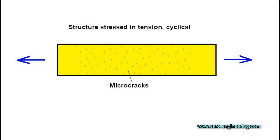To explain why this happens, I will use this piece of aluminum as an example. It is repeatedly stretched and released for many thousands of cycles. During each cycle where some of the stress is in tension, a very small amount of damage is caused, sort of like tiny cracks. By the way, only tension causes problems. Loads that produce only compression stress do not cause fatigue damage.